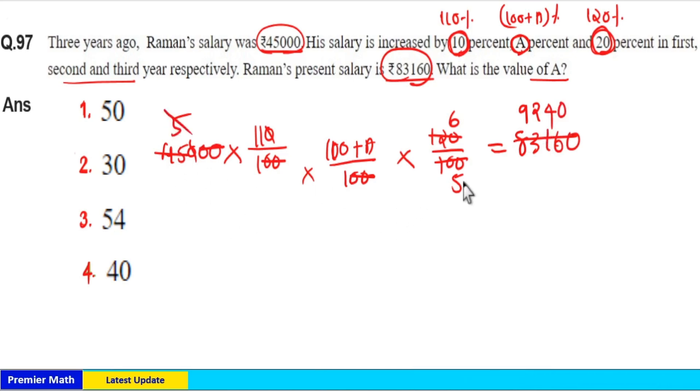5 and 5 cancel. Here 11 goes 8 times in 92, 4 times in 44 and remaining 0 here. And here 6 goes 1 time in 8, 4 times in 24 remaining 0. So 100 plus A is equal to 140, means A here is equal to 40%. Option 4 is your answer.